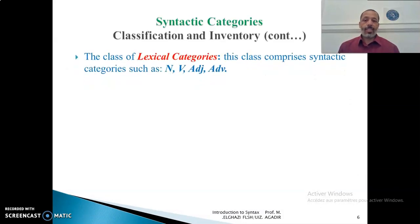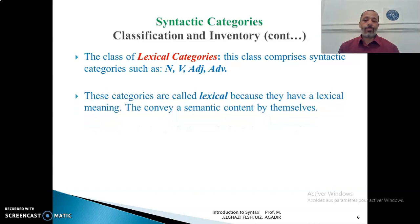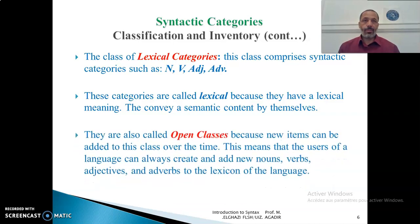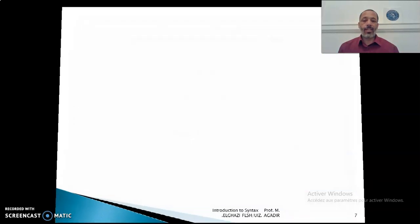The first class is lexical categories. This class comprises syntactic categories such as nouns, verbs, adjectives, and adverbs. These categories are called lexical because they have a lexical meaning — they convey a semantic content by themselves; you can find their meaning in a dictionary. This class is also called an open class because new items can be added over time, as human language has the property of creativity. Users of a language can always create and add new nouns, verbs, adjectives, and adverbs to the lexicon.